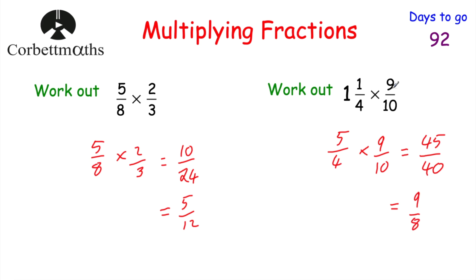In this question we were dealing with mixed numbers, so let's change this into a mixed number. How many eighths go into 9? That's 1, remainder 1. So the answer would be 1 and 1 eighth. So if we had 1 and a quarter multiplied by 9 tenths, the answer would be 1 and an eighth. And that's it.